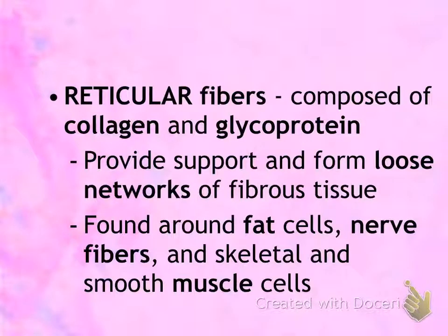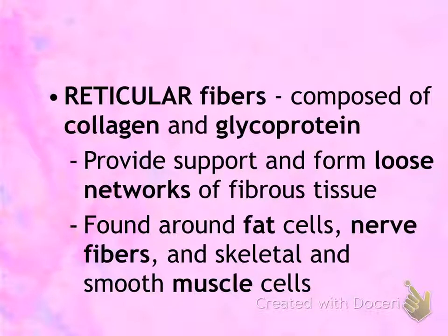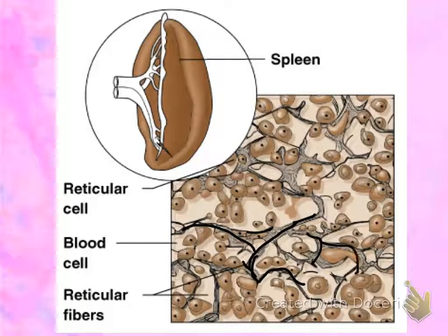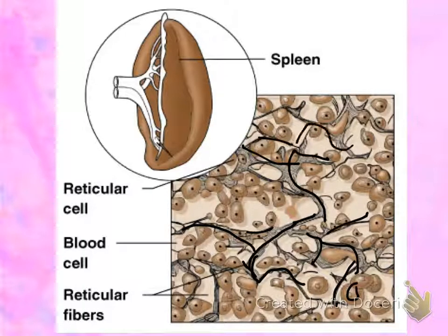The last type of fiber is called reticular fibers. It is the weakest of the three and more branched than elastic fibers. They form almost like a spider web-looking network, and their job is to hold other cells and tissues together. In this picture, all of the material in gray and black are your reticular fibers — notice how they're all webbed and holding these cells in place. The only type of tissue where you'll find reticular fibers is reticular connective tissue.